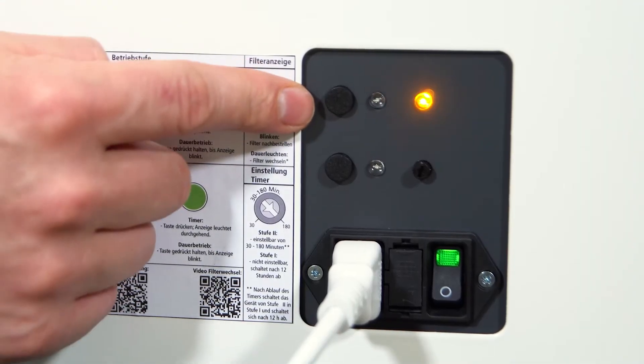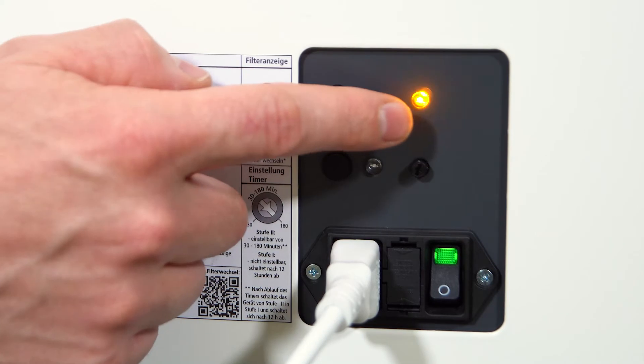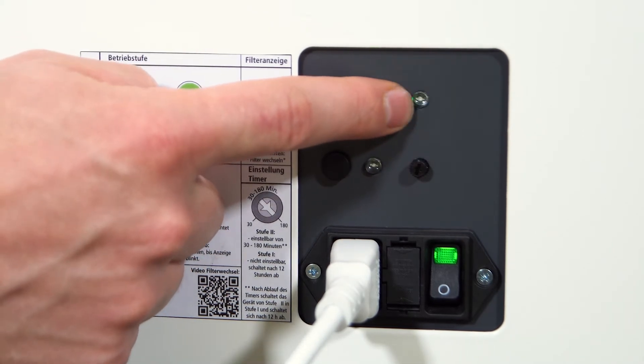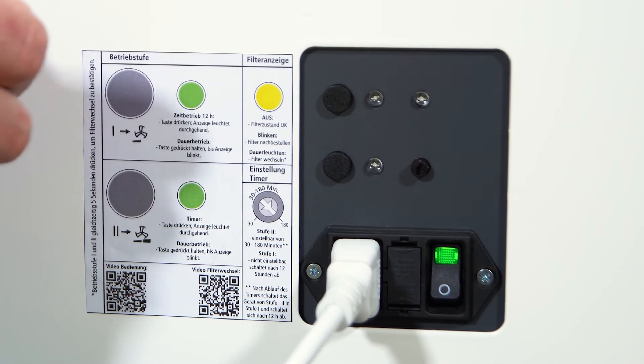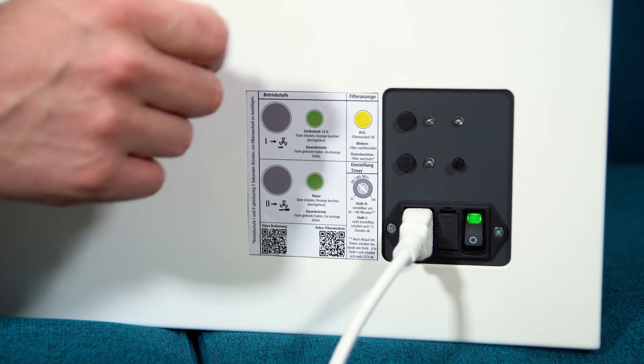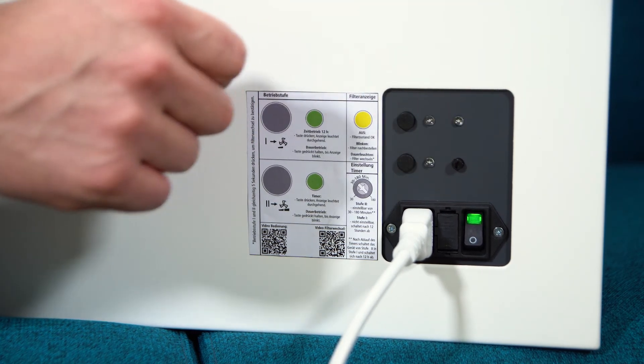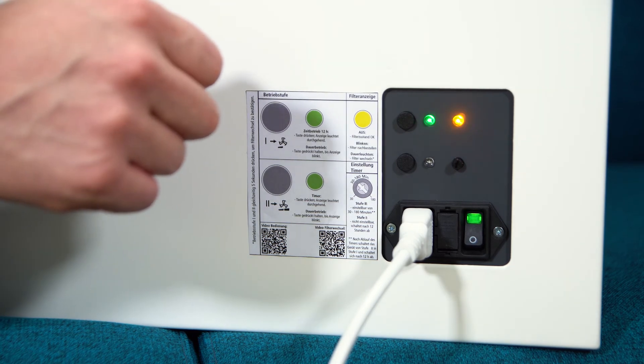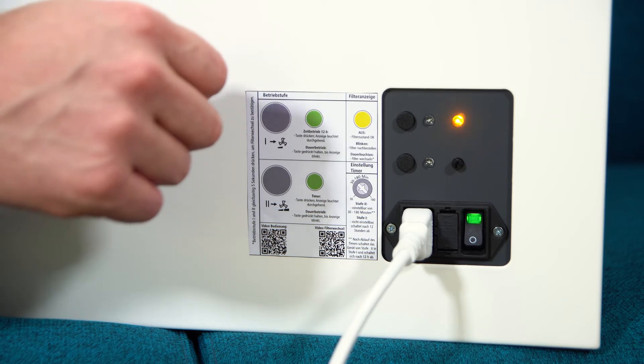After about 750 hours of operation, the yellow filter LED will start flashing. This means that you should be getting a new filter. After 800 hours, the yellow filter LED lights up continuously. So you have around 50 hours to get a new filter. From this point on, only operating level 2 is possible, as otherwise the necessary air volume flow could no longer be ensured.